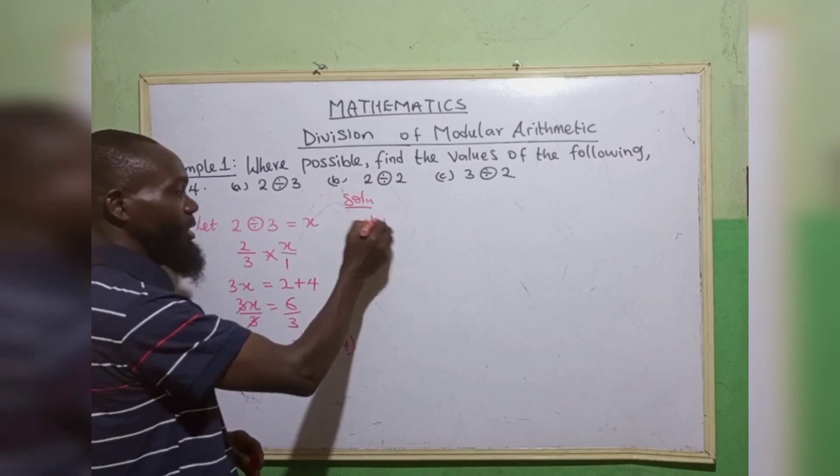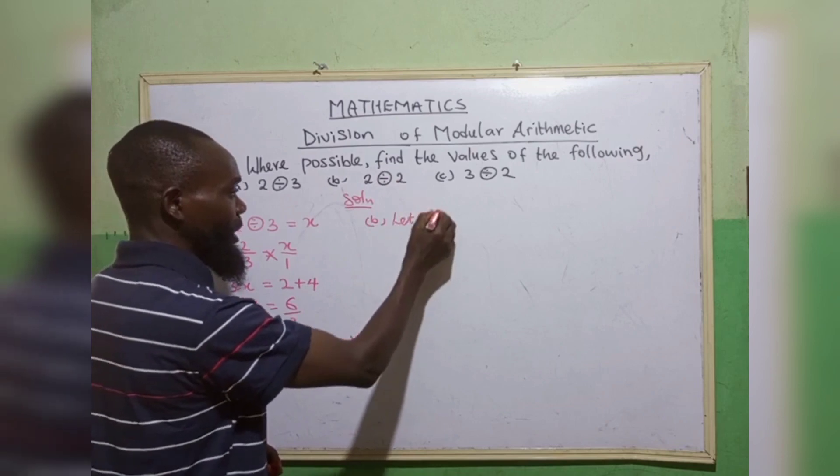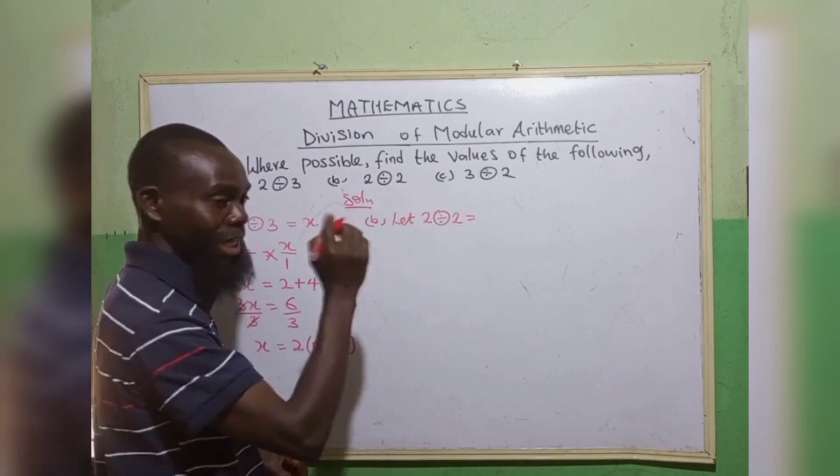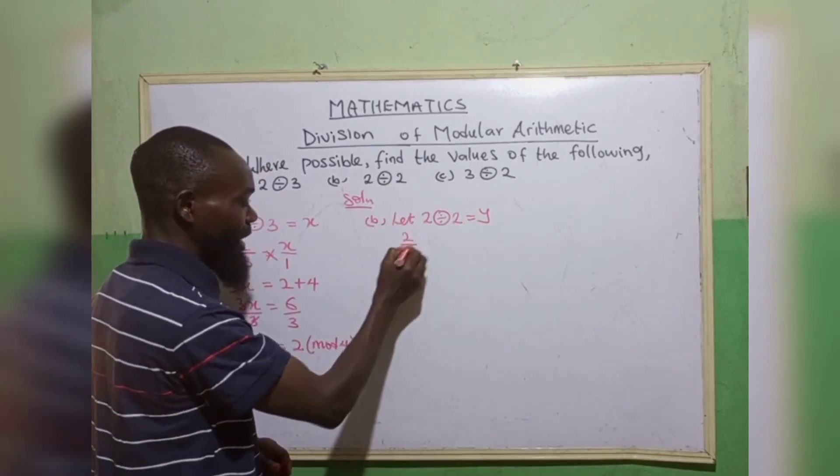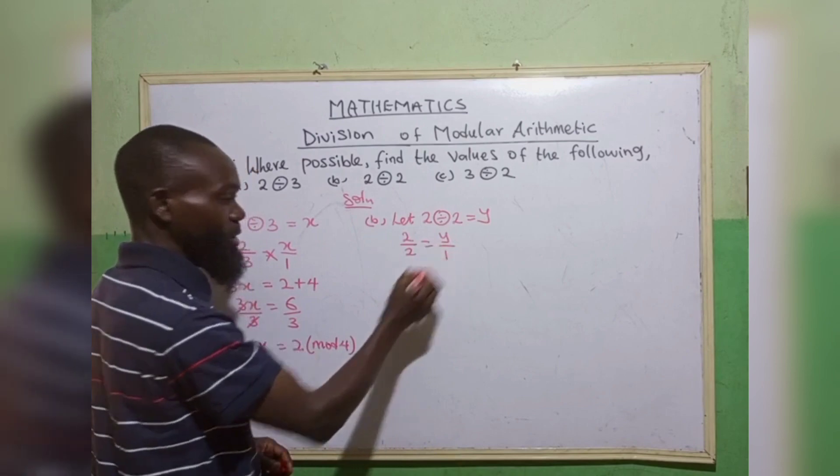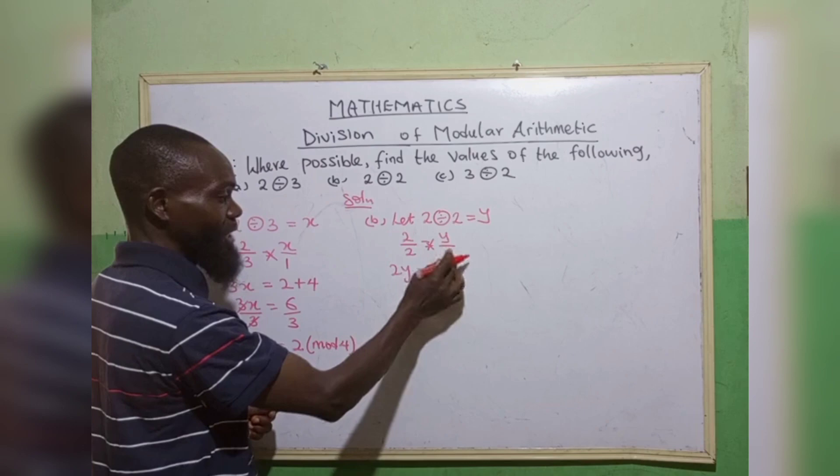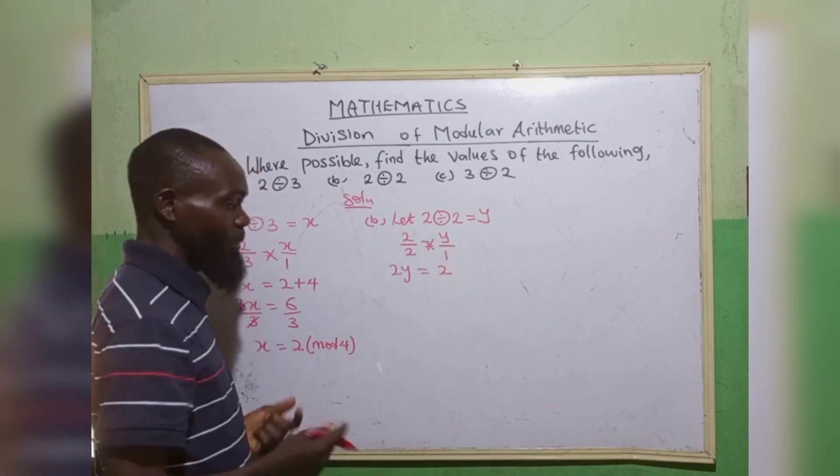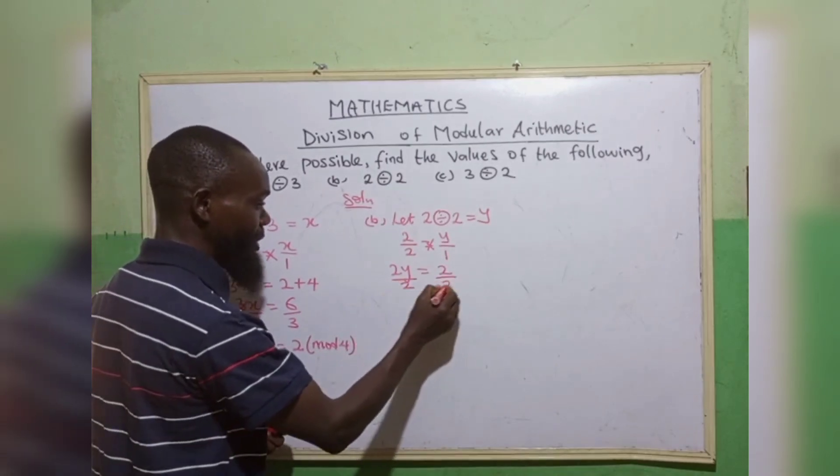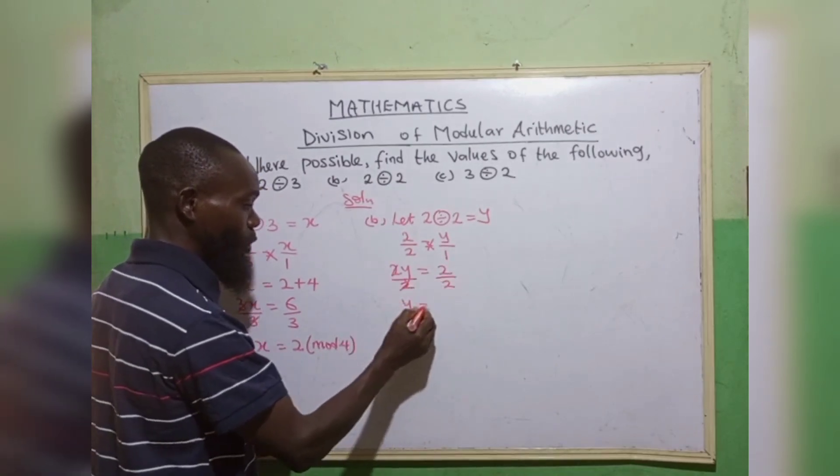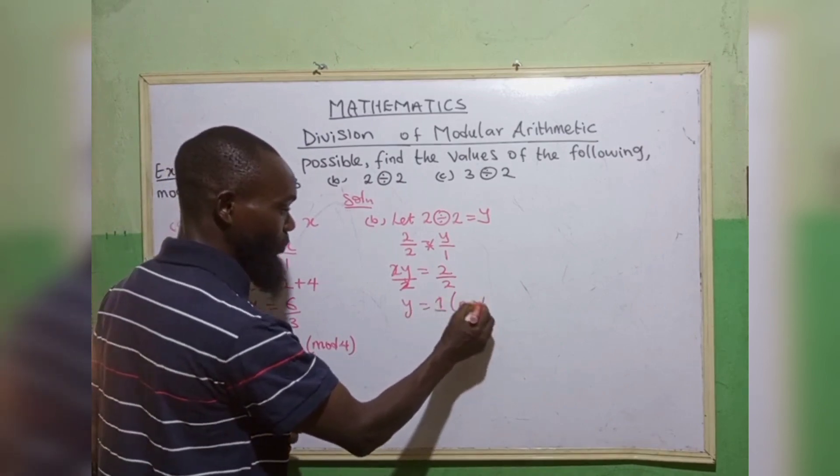The second one, we have 2 divided by 2 equals to an unknown letter y. That is 2/2 = y/1. Cross multiply, 2 times y equals to 2 times 1, we have 2. A 2 can go in 2. So y equals to 1 in mode 4.